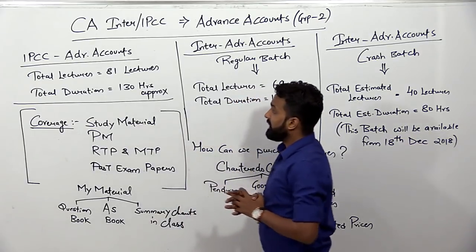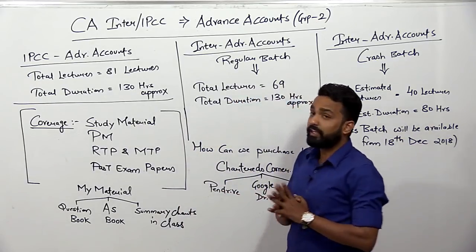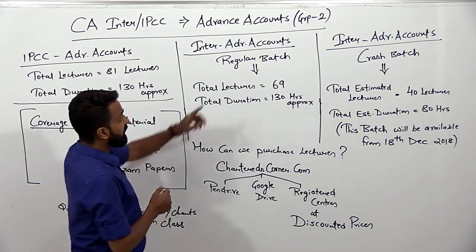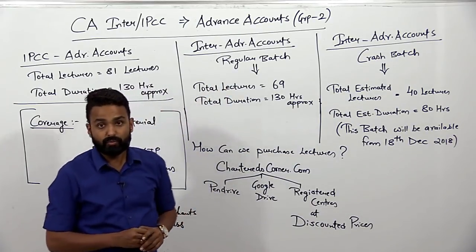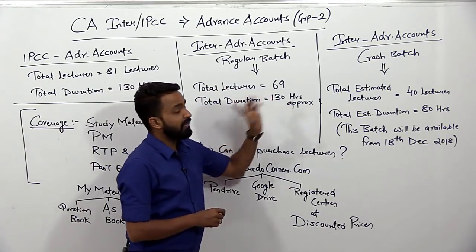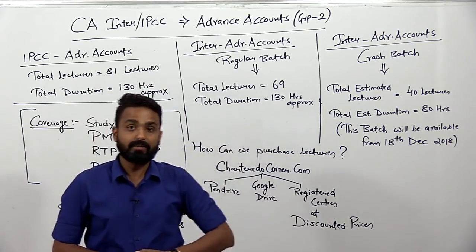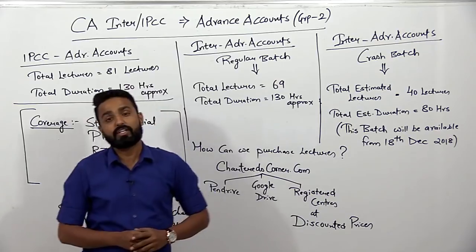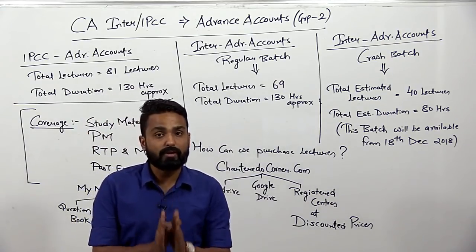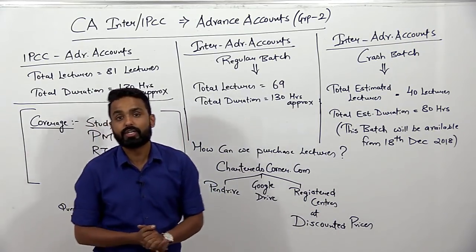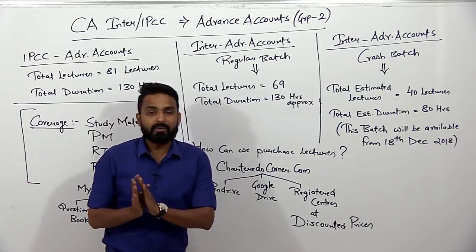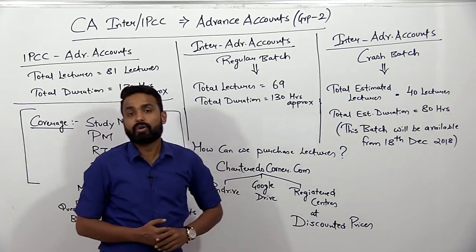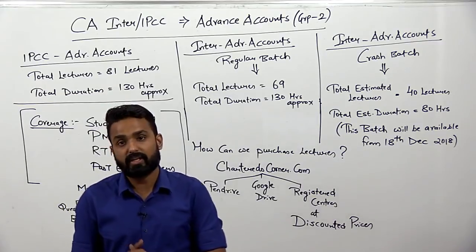दूसरा, अगर आप Intermediate के students हैं यानी new syllabus के students हैं और मेरा regular batch purchase करना चाहते हो, तो total number of lectures 69 रहेंगे और duration लगभग 130 hours रहेगा। यह batch पूरा complete है, मैंने recently इसको record किया था - 69 lectures में complete किया हुआ है।